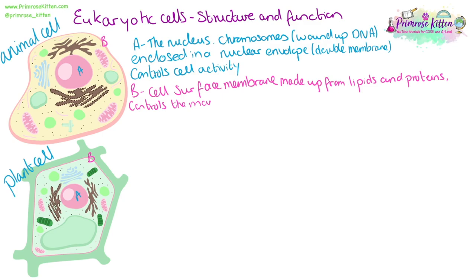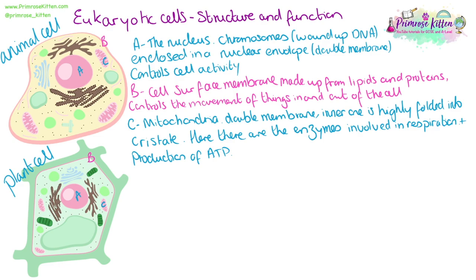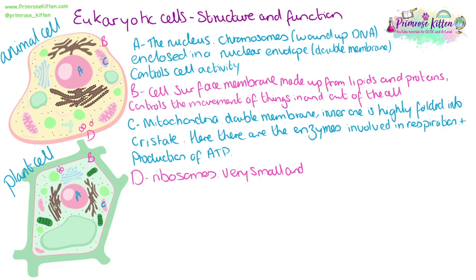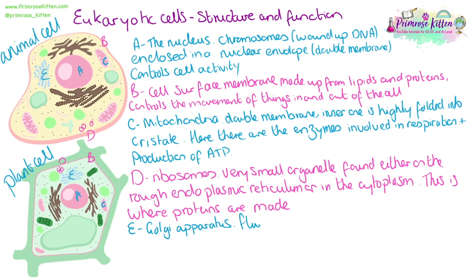There is a double membrane around the nuclear envelope and the nucleus is in charge of controlling the cell's activity. Both plant cells and animal cells have a cell surface membrane, made up from lipids and proteins, which controls the movement of things in and out of the cell. They both have mitochondria, which has a double membrane that is very heavily folded. The ribosomes, tiny black dots in both cell types, can be found on the rough endoplasmic reticulum or in the cytoplasm — this is where proteins are made.